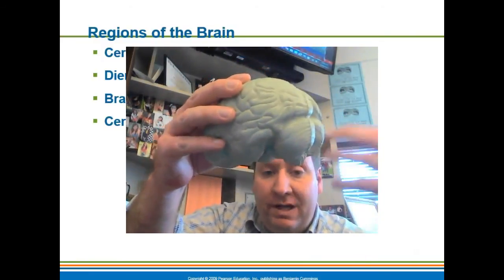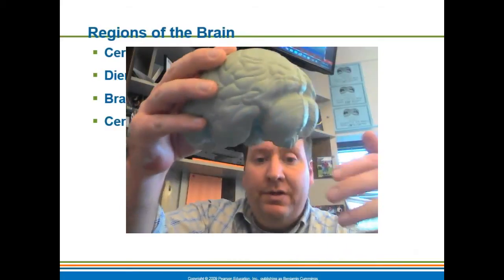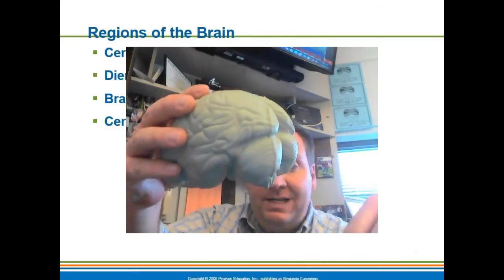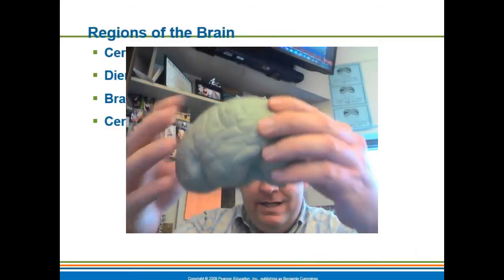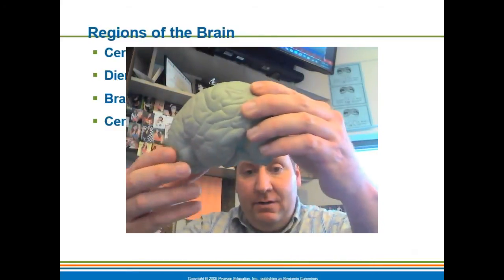This is where we get the frontal lobe, the temporal lobe, the parietal lobe, and the occipital lobe.